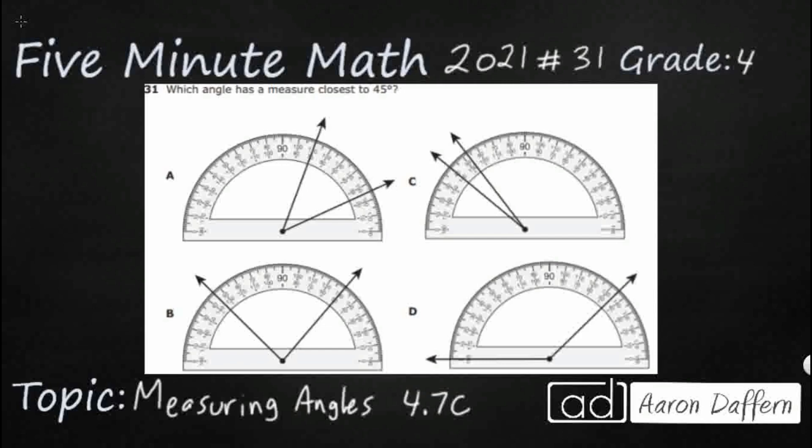So we've got four different angles here and they are all being measured with a protractor. A protractor is this half moon shape that you see here. It is what we use to measure angles, just like we use a ruler to measure length. So we're going to measure these angles with a protractor and we're looking for what is the distance in degrees between those lines.